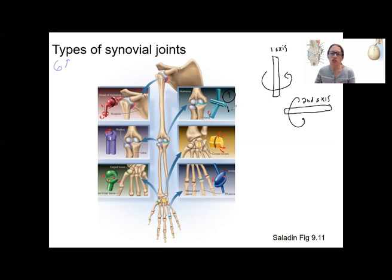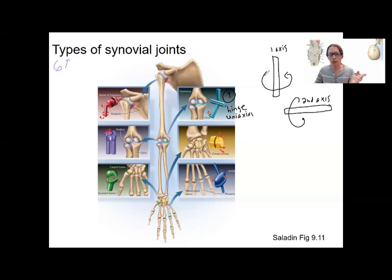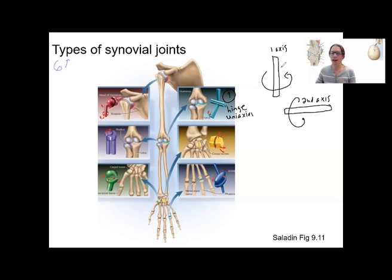Starting with number one: a hinge joint. This is like a door hinge — it only moves in one direction. That's called uniaxial; it can only move around one axis, just like a door can't move in any other planes. Examples of this would be the humerus and ulna — that's your elbow — and your knee.